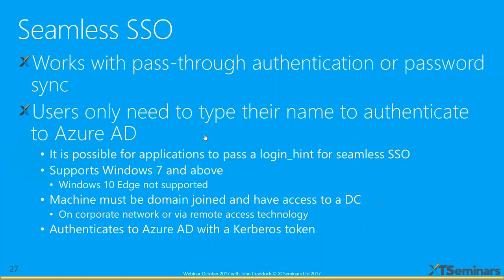Seamless SSO, which also just went GA, works with both pass-through authentication and password sync. Users only need to type their name to authenticate to Azure AD, and with login hints or domain hints, they won't even need to type their password. It's supported for Windows 7 and above — Edge is currently not supported but it's a work in progress. You need to be connected to your on-premise AD. In essence, we authenticate against Azure AD using a Kerberos token. Understanding all of this is something we spend quite a bit of time on in the masterclass.